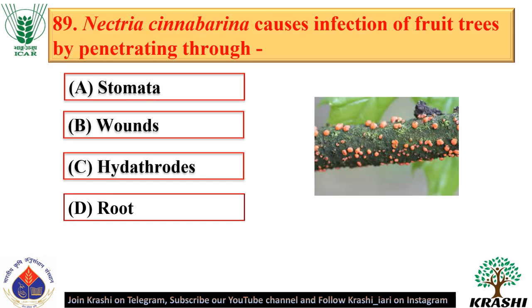Question number 89. Nectria cinnabirina causes infection of fruit trees by penetrating through wounds — option B. It is also known as coral spot.